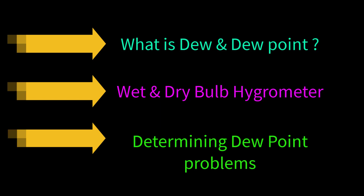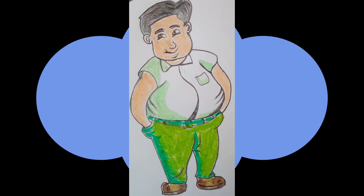Last of all, we will determine dew point problems on the basis of Glacier's law. Let's start with a picture of a person who can eat a lot. Though the person can eat a lot, the stomach of the person has a limited capacity to contain food.